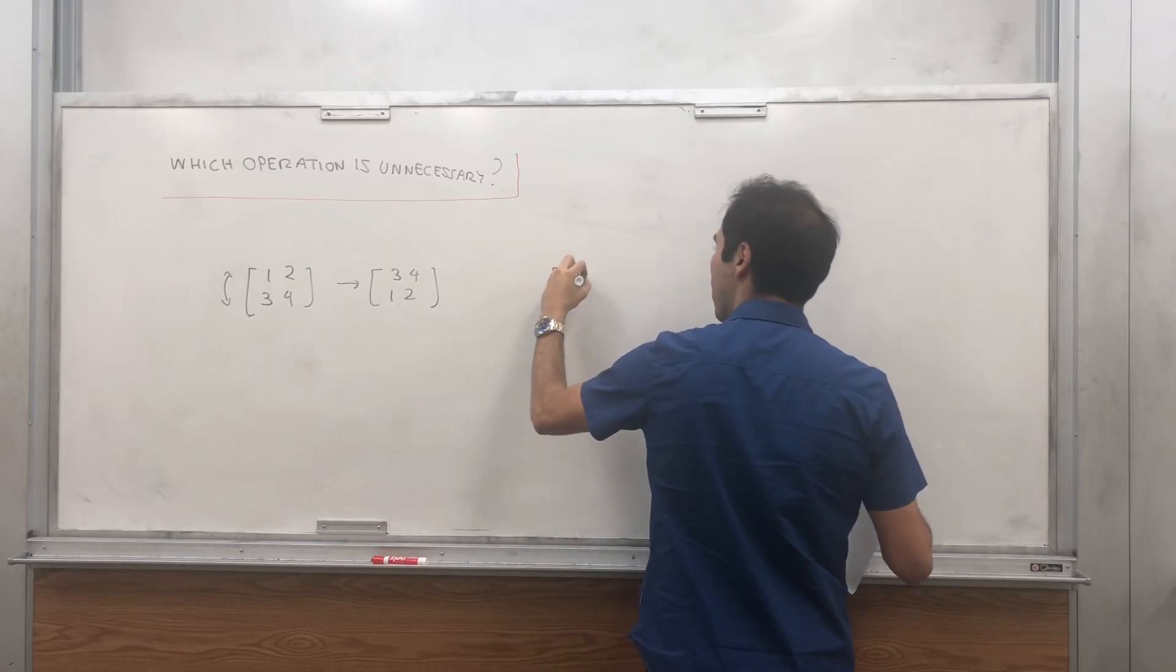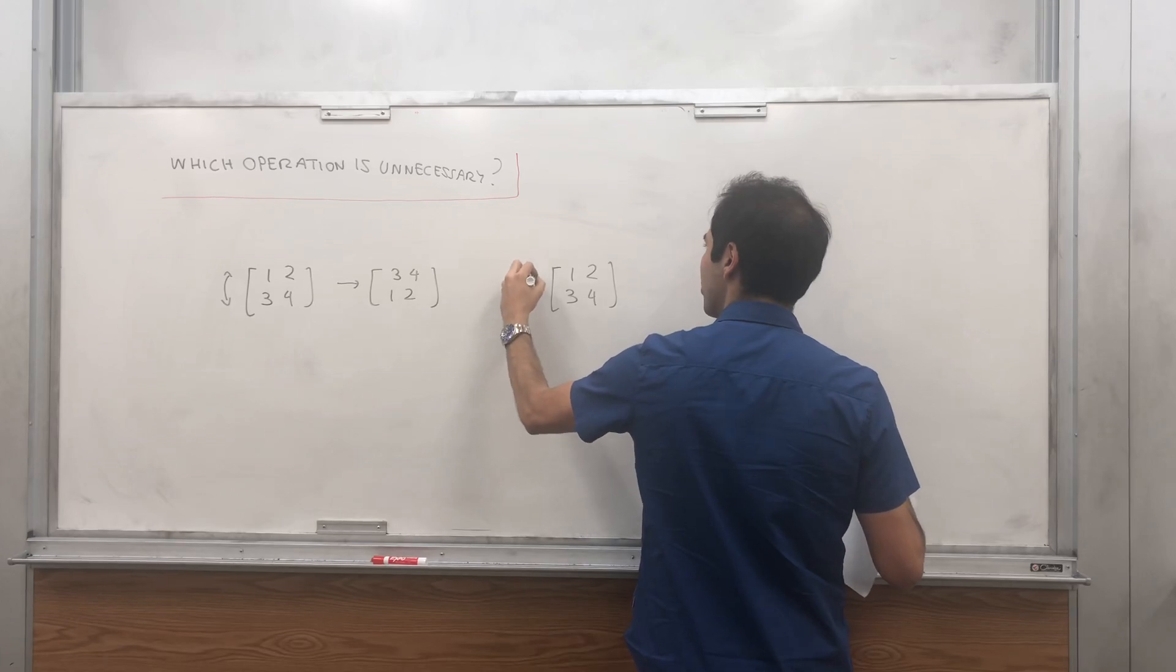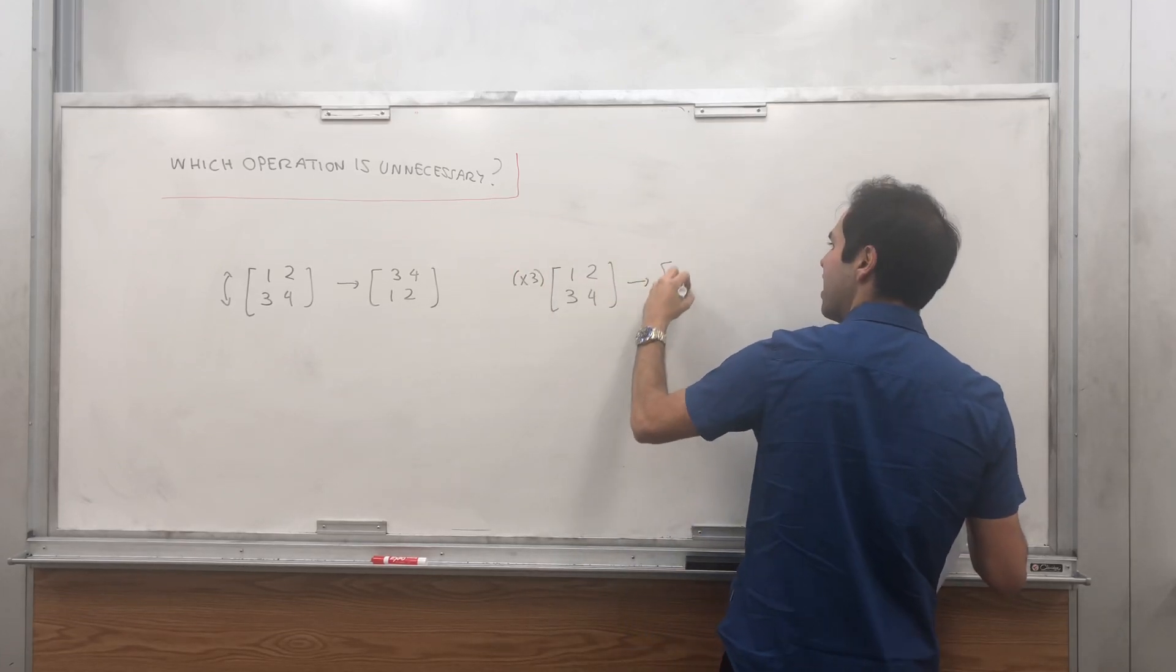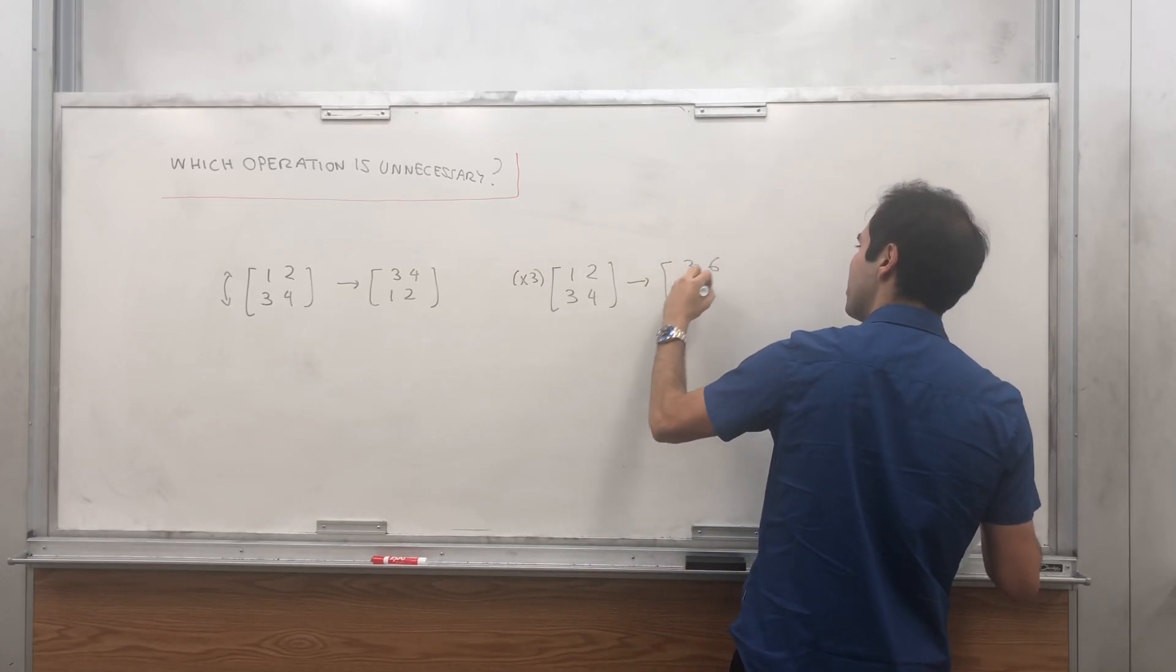Then, you can also multiply a row of a matrix by a certain number to get three, six, three, four.